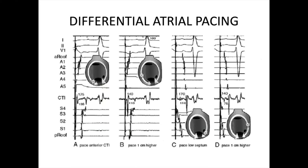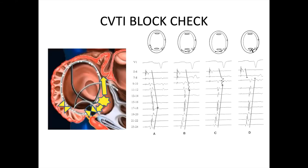Differential atrial pacing: the basis for this maneuver is that if we measure the return cycle from pacing, the path of electricity will be longest if we pace on one side of the ablation line and measure on the other side as close as we can. If we measure the return wave a little bit away from the line, the time will be shorter. This is one of the maneuvers to confirm block is present — if the time by moving away from the ablation line does not get shorter and remains similar to what you have measuring next to the line, you don't have a block.